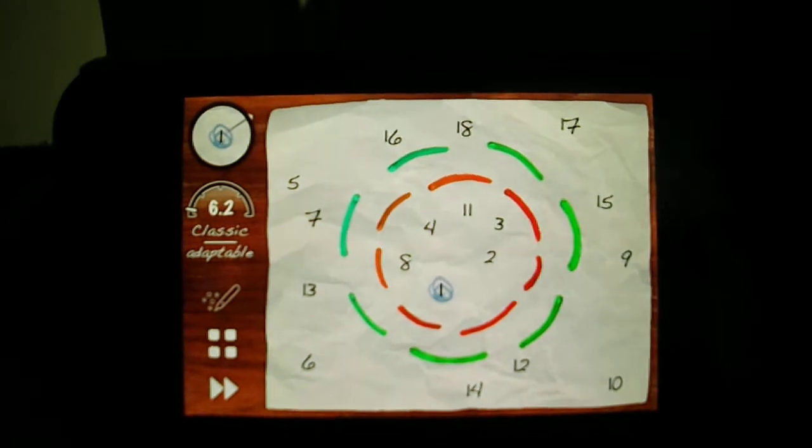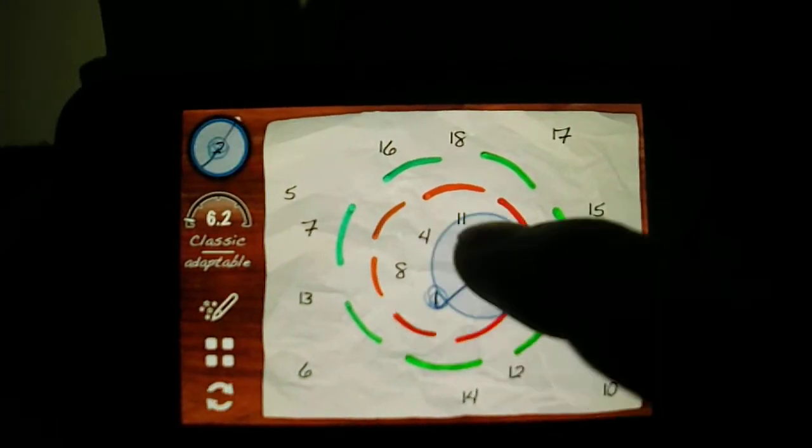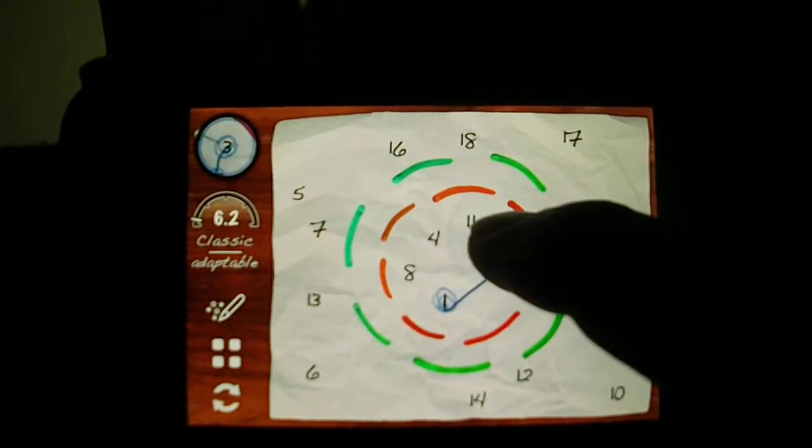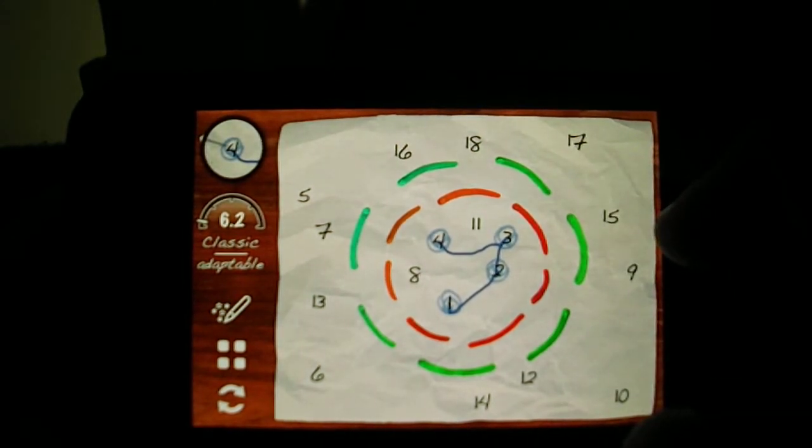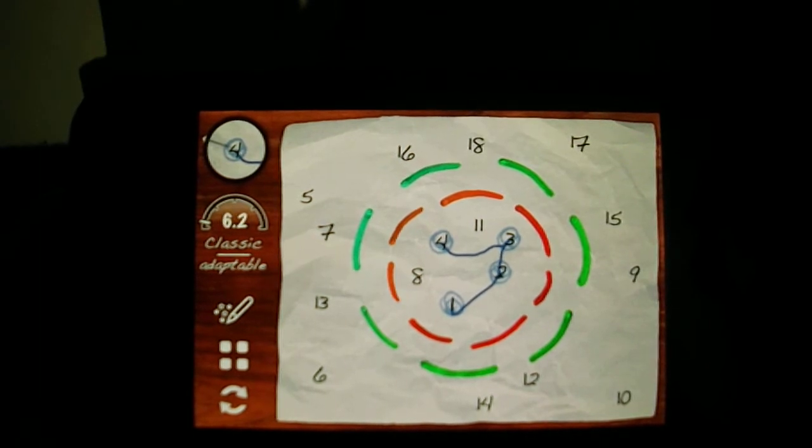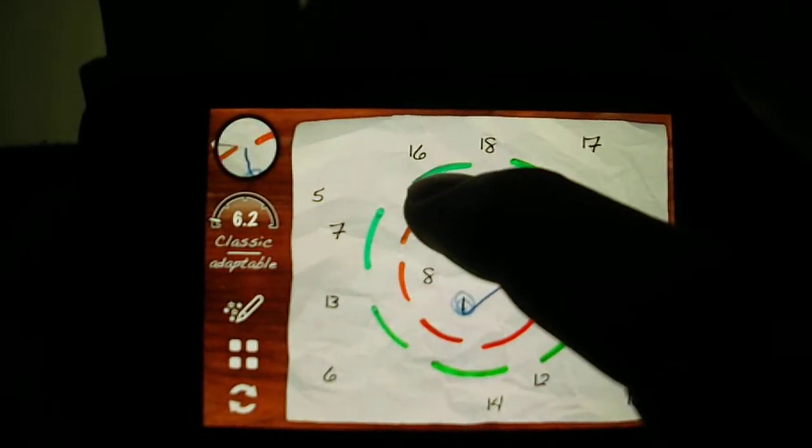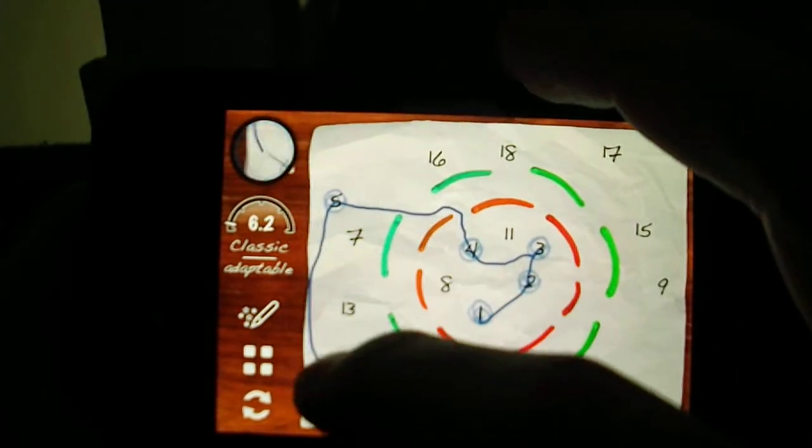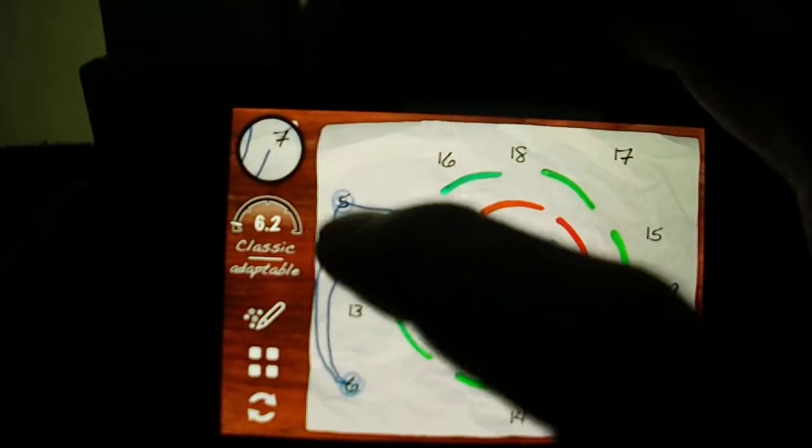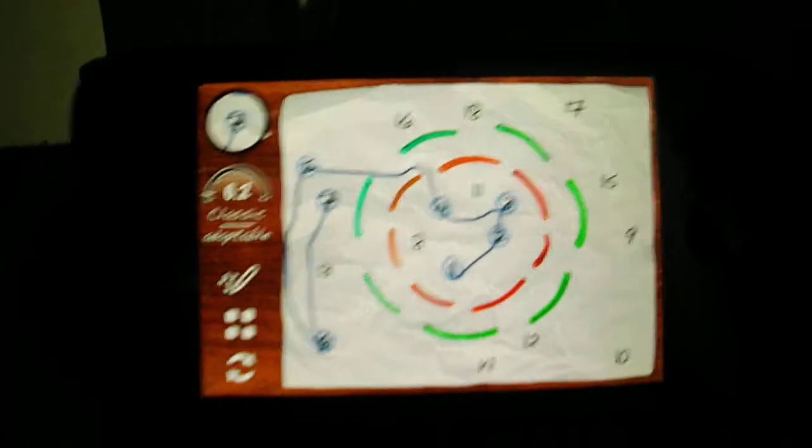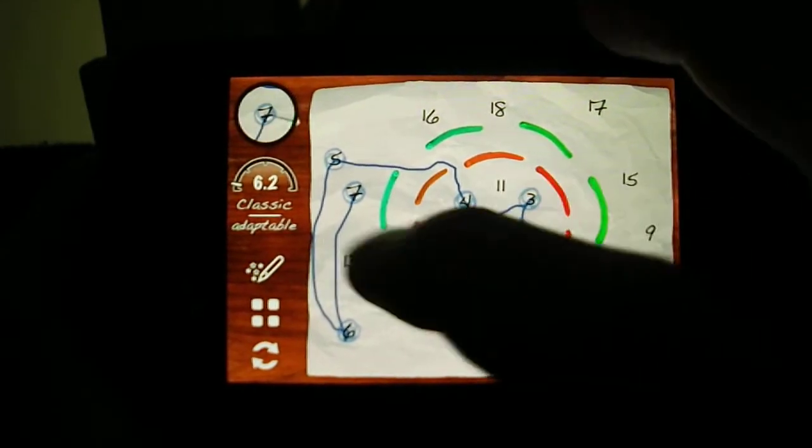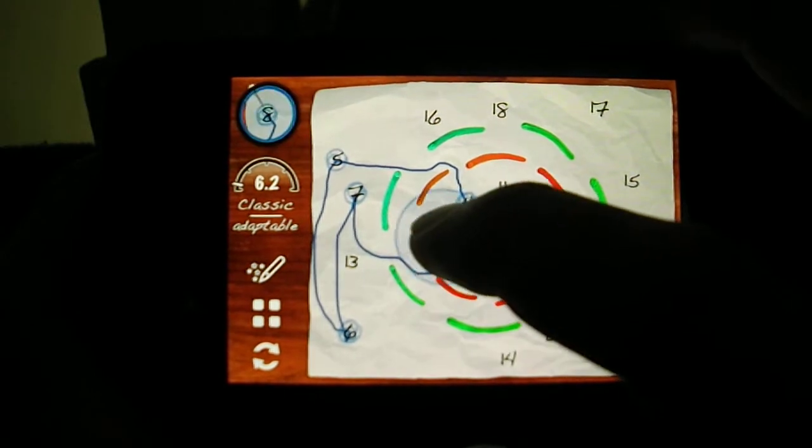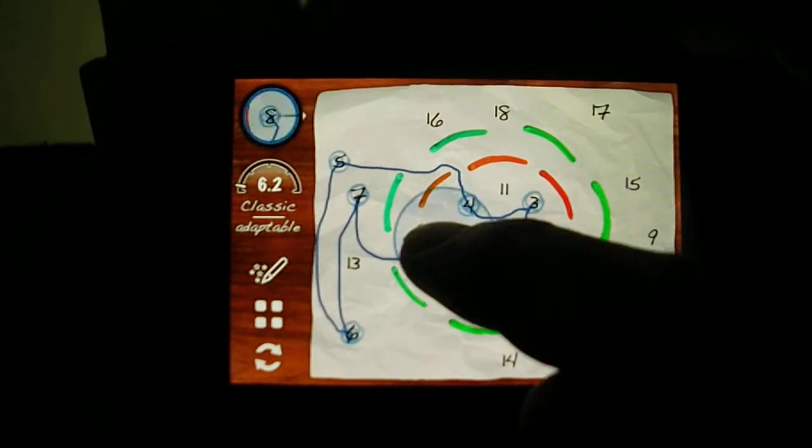So as you can see you get extra borders and stuff so we're going to try it. One, three, four. Where's five? Am I blind? Oh there's five. Five, six, seven, eight.